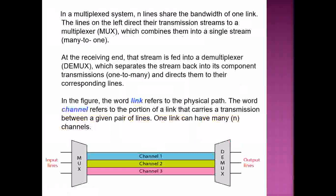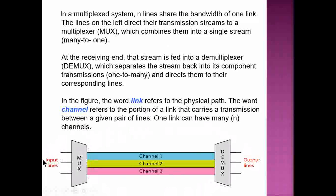In a multiplexing system, several lines share the bandwidth of one link. The lines on the left direct their transmission streams to the multiplexer, which combines them into a single stream — many to one. After the receiving end, the stream is fed into the demultiplexer, which separates the stream back into its component transmissions — one to many — and directs them to their corresponding lines. The multiplexer does not work alone; it works with the demultiplexer.